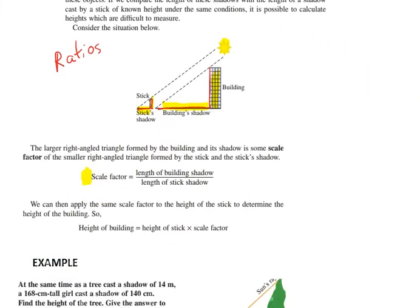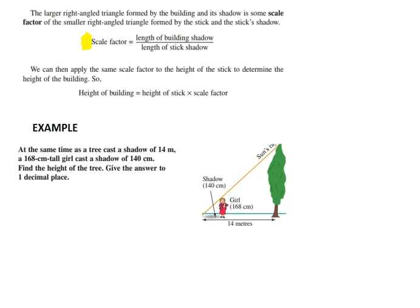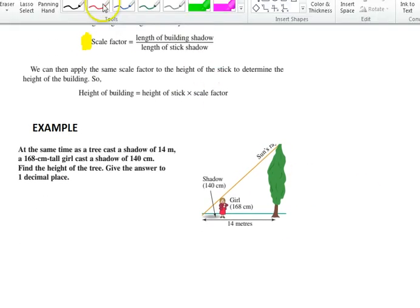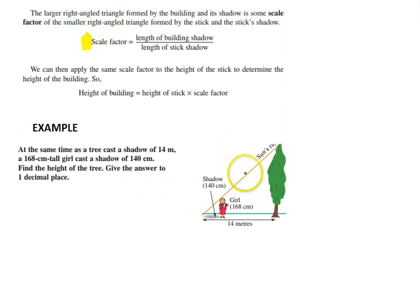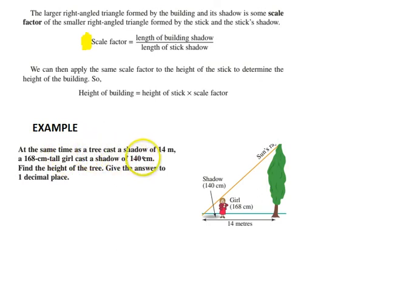Let's actually just do a question and see how this works. There's a tree and a person. At the same time as the tree casts a shadow of 14 metres, a 168 centimetre tall girl casts a shadow of 140 centimetres. Find the height of the tree, giving the answer to one decimal place.